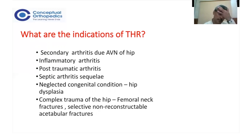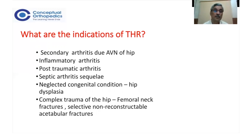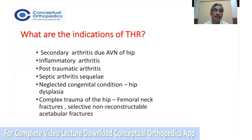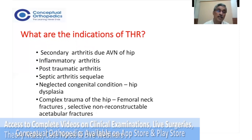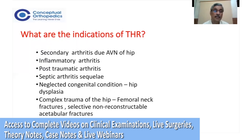Coming to the indications of THR: advanced collapse and degenerative changes following avascular necrosis of the hip, inflammatory arthritis, post-traumatic conditions like acetabular fractures, fracture dislocations, or fractured neck of femur leading to degenerative arthritis, and pediatric conditions like Perthes disease, SCFE, and dysplasia — all of these could be indications for a total hip replacement.